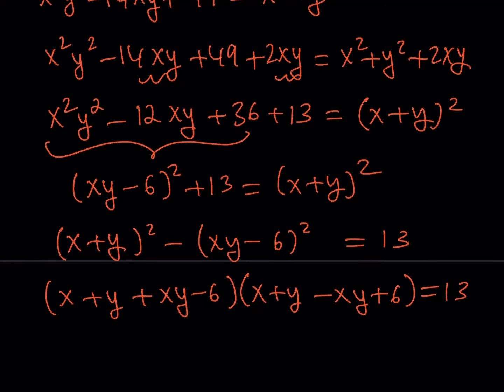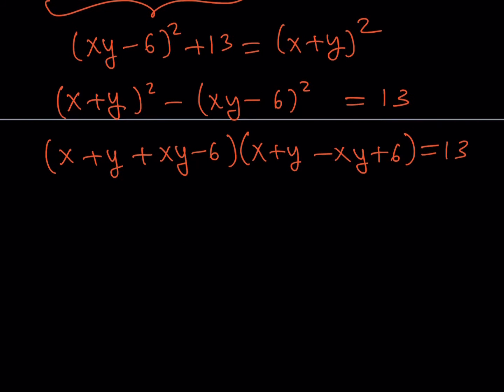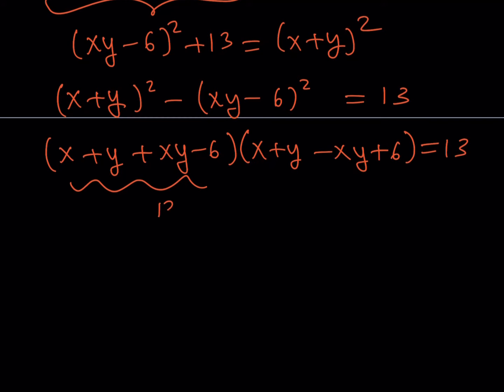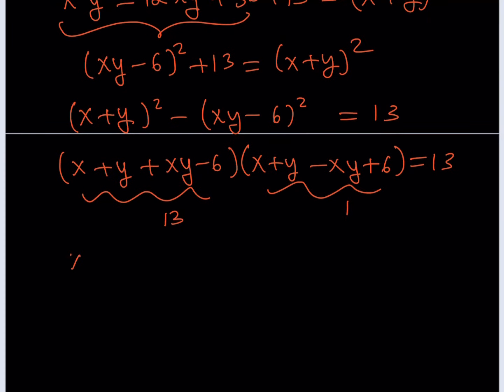Since 13 is a prime number, it can be factored as 13×1, 1×13, (−13)×(−1), or (−1)×(−13) — four ways total. Each gives a solution. Let's work out one of them.